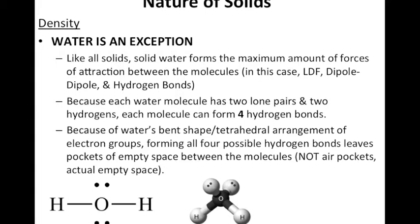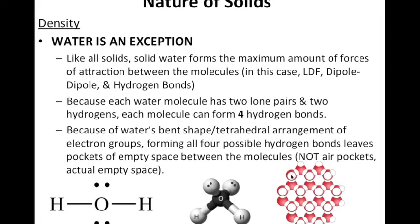These pockets are not air pockets — they are not filled with air. They are pockets of empty space; there is literally nothing there. Because of the tetrahedral shape, we get hexagons: six molecules forming a hexagonal shape, and inside are those areas of empty space. The molecules are rigidly held in place with the maximum amount of bonds — hydrogen bonds, London dispersion, and dipole-dipole. Between each hexagon, there is this pocket of emptiness that forms.